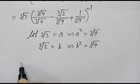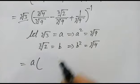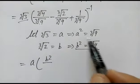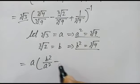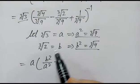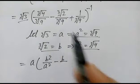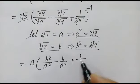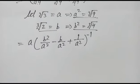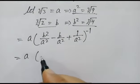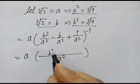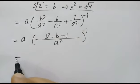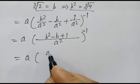If we put in the values, cube root of 4 is b squared over cube root of 9 which is a squared, minus cube root of 2 which is b over cube root of 9 which is a squared, plus 1 over cube root of 9 which is a squared, whole power minus 1. Taking LCM a squared, we get b squared minus b plus 1, whole power minus 1.